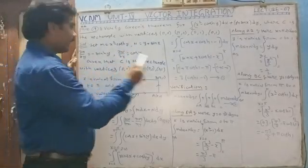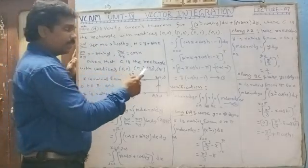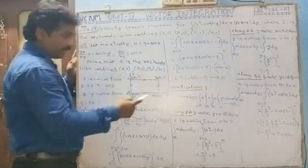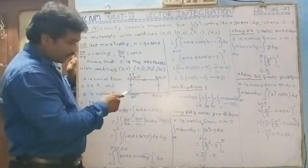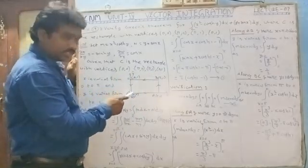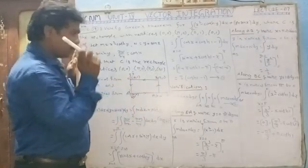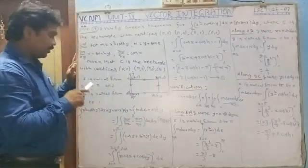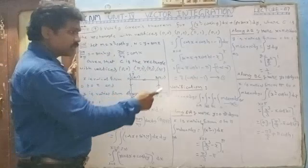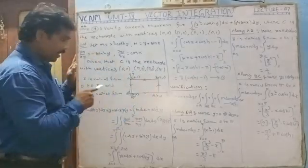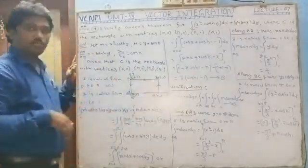Given that C is the rectangle with vertices (0,0), (π, 0), (π, 1), and (0, 1). Drawing this: x-axis and y-axis with the origin; this is (π, 0), (π, 1), and (0, 1). So x varies from 0 to π, and y varies from 0 to 1.